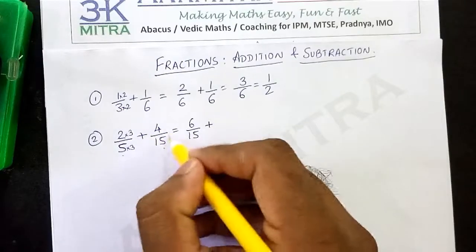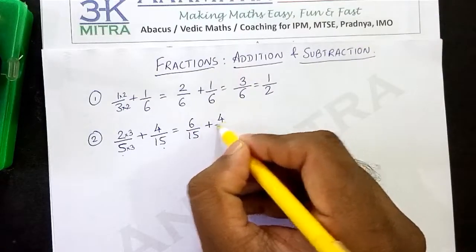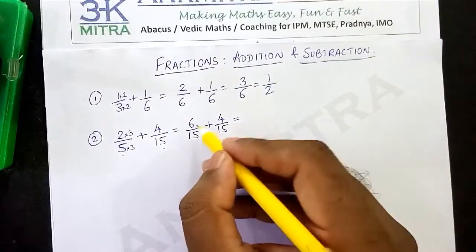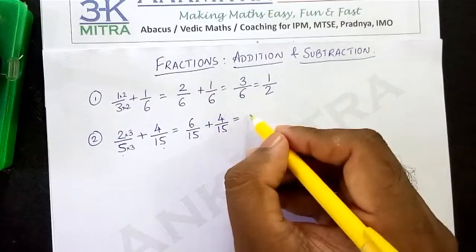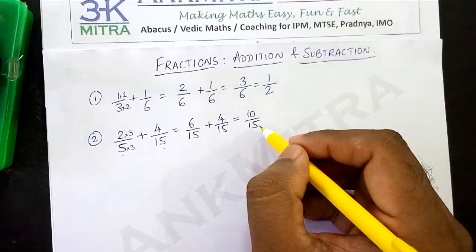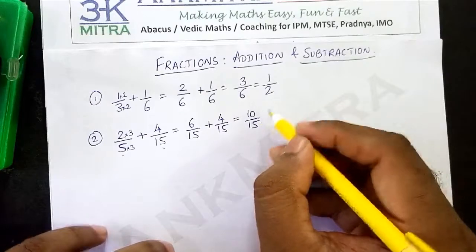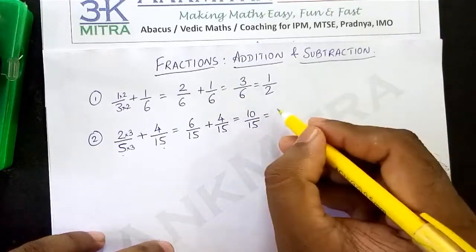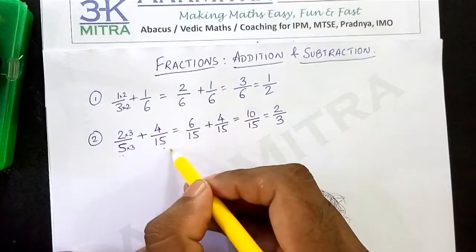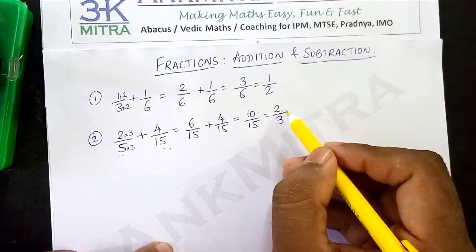The second fraction will remain the same because we wanted the denominator to be 15 equal. So it will be 4 upon 15. The denominators are now equal, so the numerators will get added. So 6 plus 4 is 10 — 10 upon 15. We can reduce it by dividing both the numerator and denominator by 5, since both are in the table of 5. Dividing both by 5, we get 2 upon 3. So 2 upon 5 plus 4 upon 15 gives us a final answer of 10 upon 15, which when reduced becomes 2 upon 3.